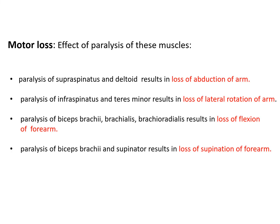What is the effect of paralysis of these muscles? Supraspinatus and deltoid are responsible for abduction of the arm, so their paralysis results in loss of abduction. Infraspinatus and teres minor are involved in lateral rotation, so their paralysis results in loss of lateral rotation — causing the arm to remain adducted and medially rotated. Biceps brachii, brachialis, and brachioradialis are involved in flexion of the forearm, so their paralysis results in loss of forearm flexion. Biceps brachii, brachioradialis, and supinator are responsible for supination, so their paralysis results in loss of supination — causing the forearm to remain extended and pronated.